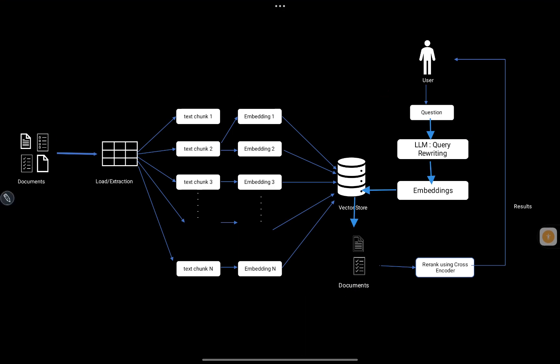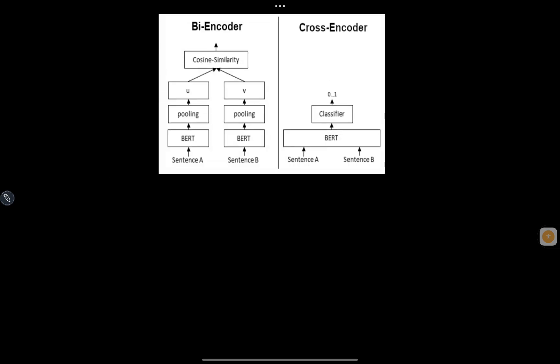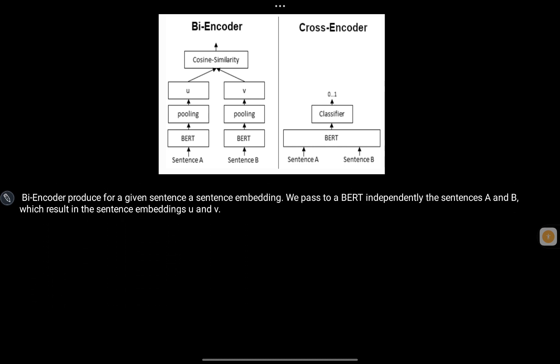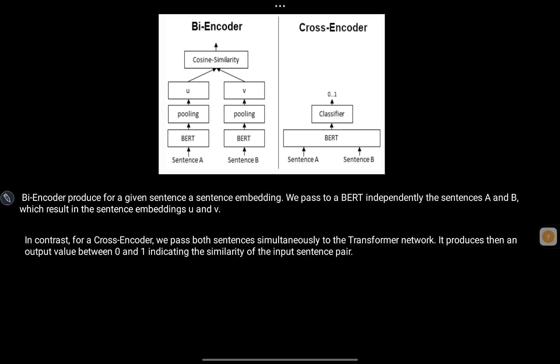Now let's talk about what the cross-encoder is. In the sentence transformer documentation there are two types of encoders: a bi-encoder and a cross-encoder. The bi-encoder passes each sentence individually through a sentence embedding model, producing embeddings independently per sentence, and then uses cosine similarity to get a semantic score. In contrast, the cross-encoder passes both sentences simultaneously to the transformer network.